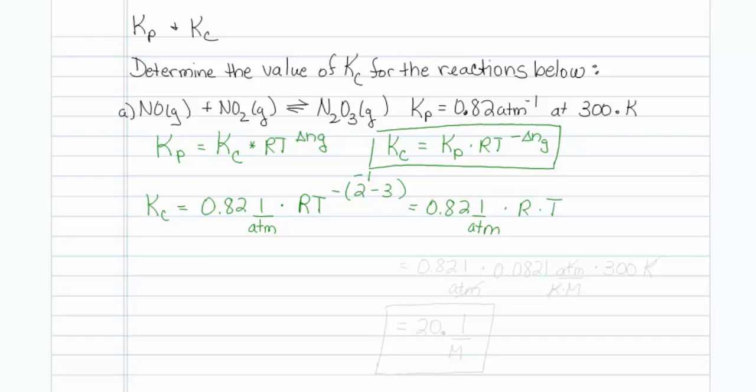Let me work that out. 0.82, one over atmospheres, the R that we're going to use is 0.0821 atmosphere per Kelvin molar, and our temperature is 300 degrees Kelvin. When I punch that into my calculator, I get 20 point, not very much, but it's only good to two sig figs. Let's look at the units. It was one over atmospheres, those are going to cancel out. Temperature is going to cancel out. Now it's one over molar. That's really the way the unit should be. If it starts out at one over atmosphere, it should finish one over molar.